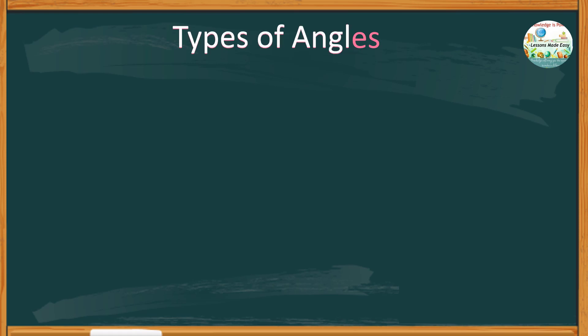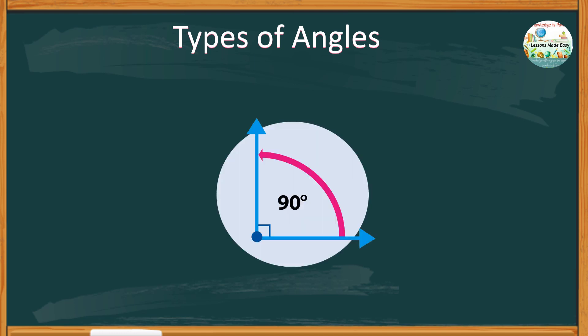There are different types of angles based on size. The most common type is an angle whose measurement is exactly 90 degrees. I'm sure you know this type of angle. This is called a right angle.